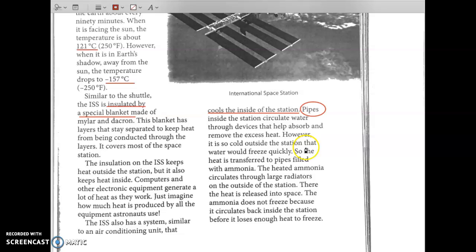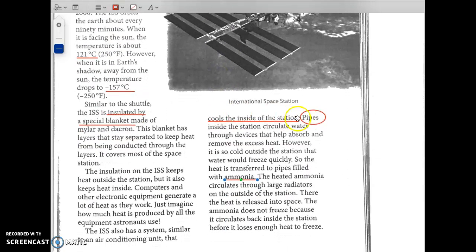The ISS also has a system similar to an air conditioning unit that cools the inside of the station. Pipes that circulate water through devices that help absorb and remove the excess heat. However, it is so cold outside the station that water would freeze quickly, so the heat is transferred to pipes filled with ammonia. The heat and ammonia circulates through large radiators on the outside of the station. There, the heat is released into space. The ammonia does not freeze because it circulates back inside the station before it loses enough heat to freeze. So what are some ways that the ISS is protected from the heat or keeps heat inside? Yes, you can see in the main ideas of the paragraphs. They use insulation. They use a special blanket. They also have a system that's similar to AC. They use pipes and ammonia. All right.